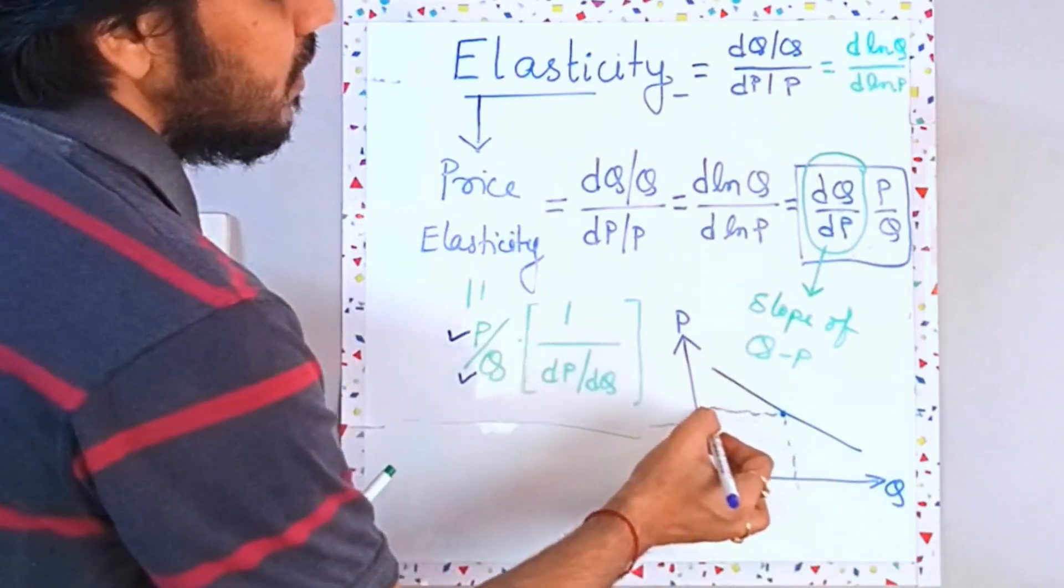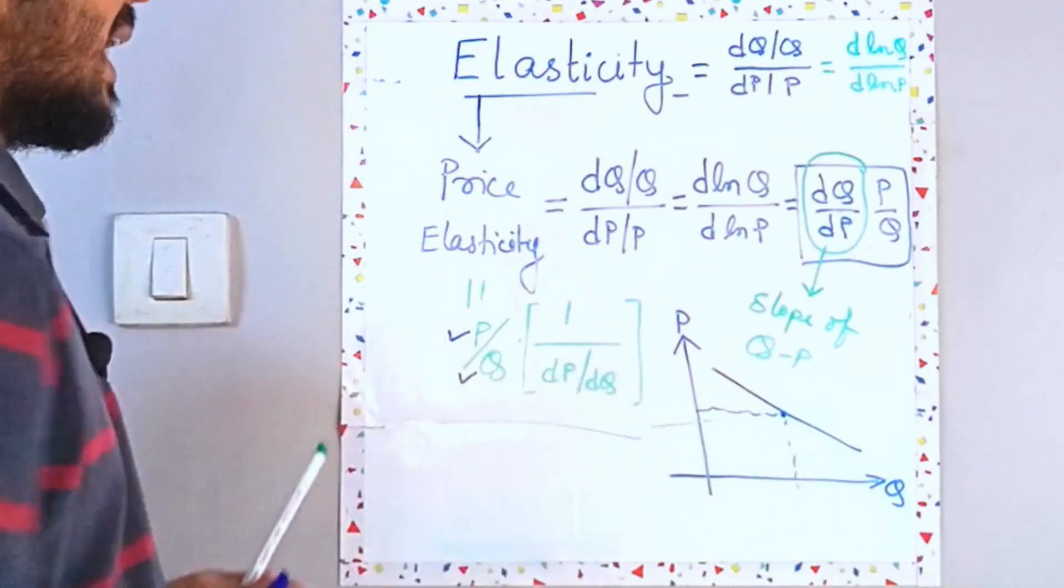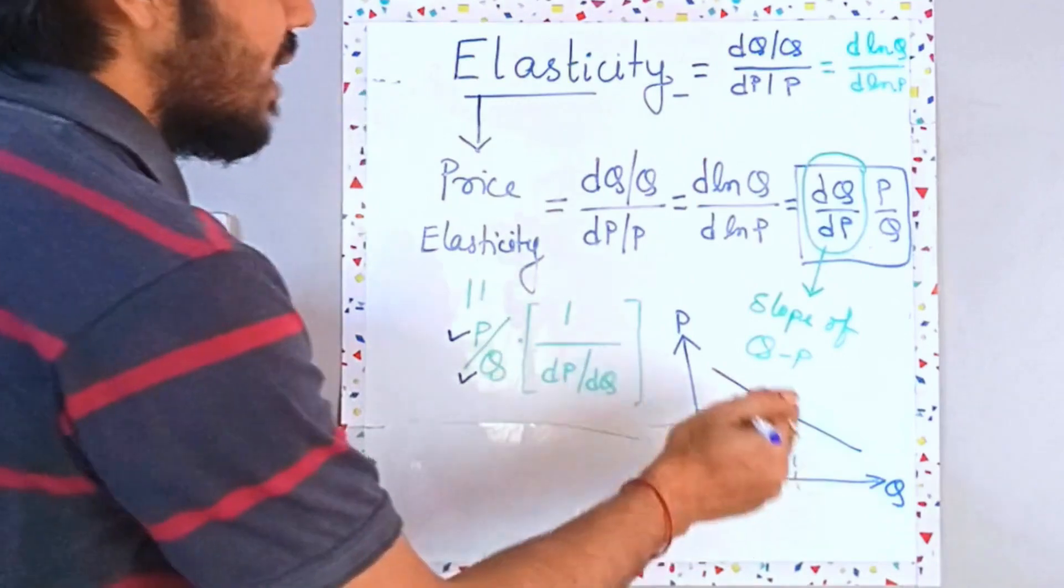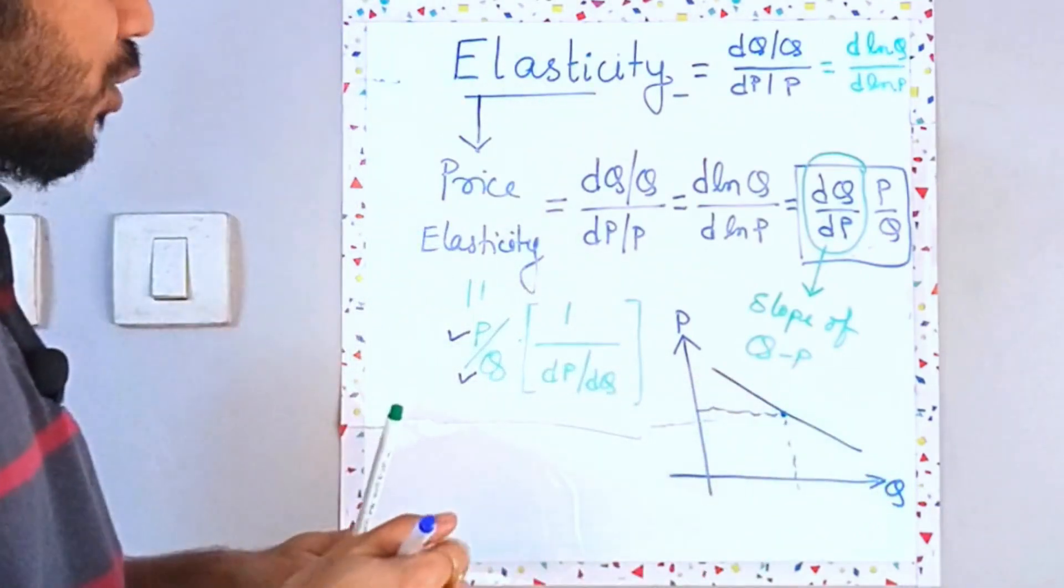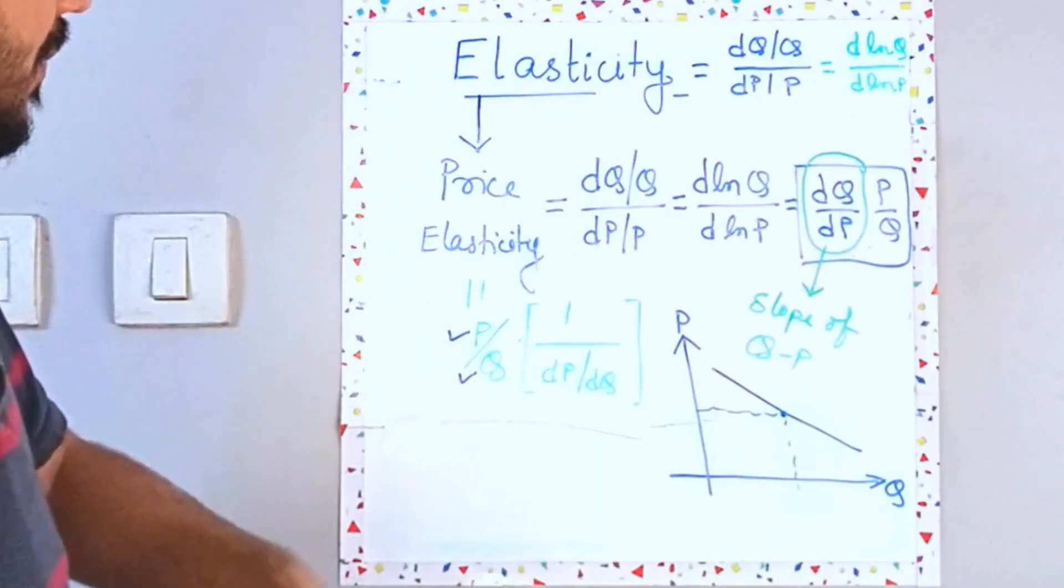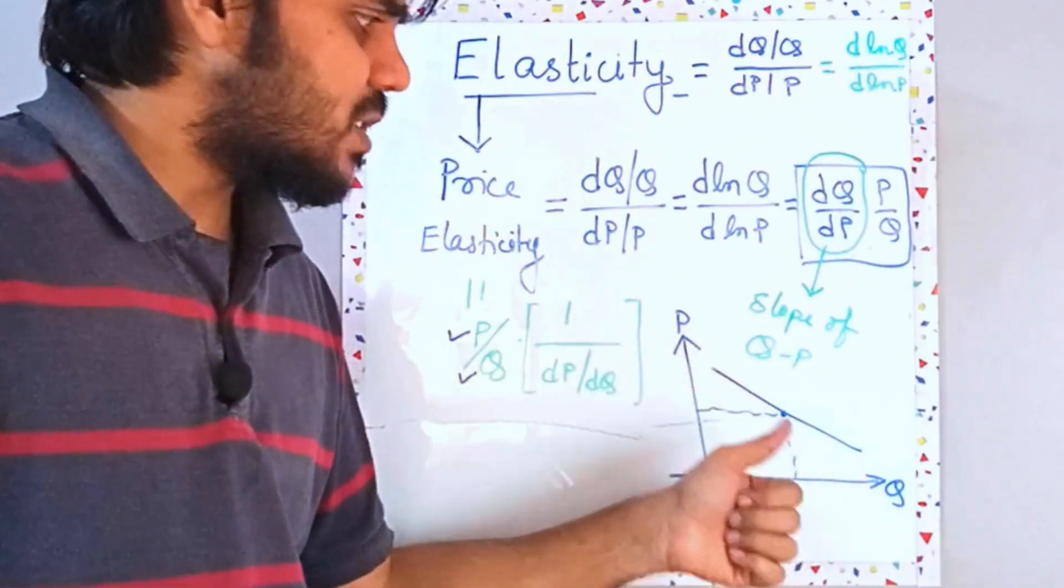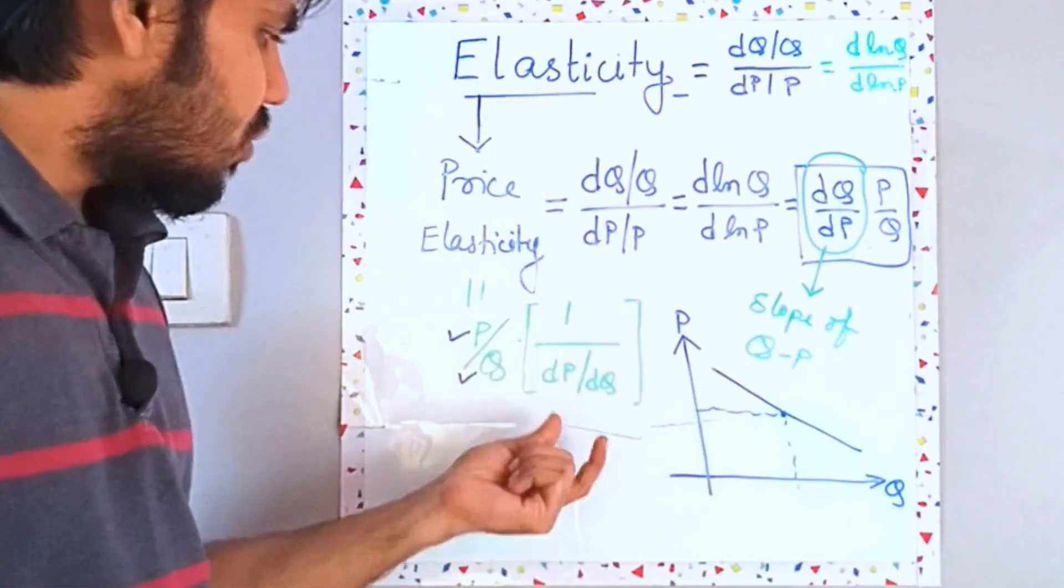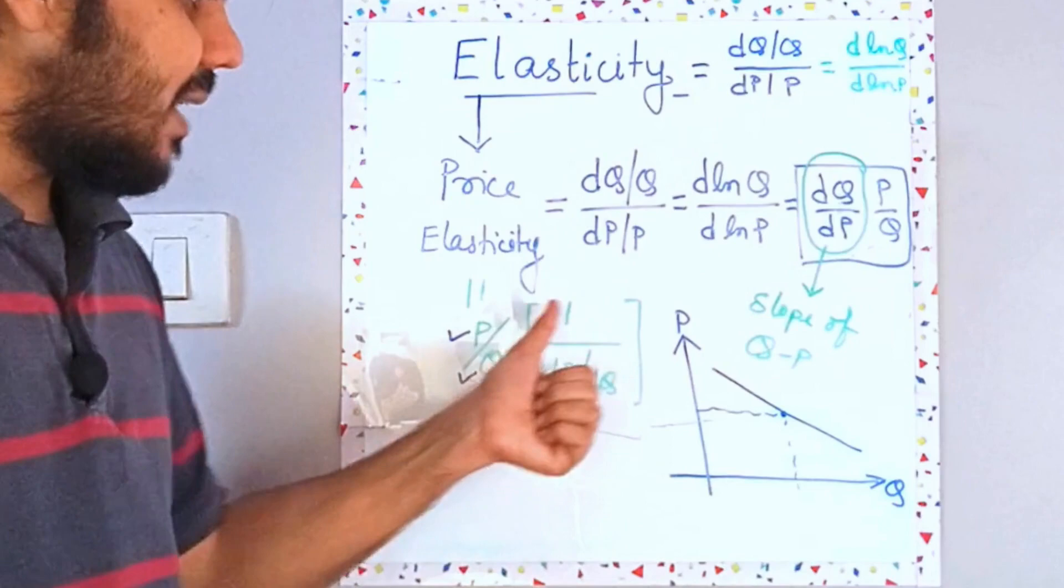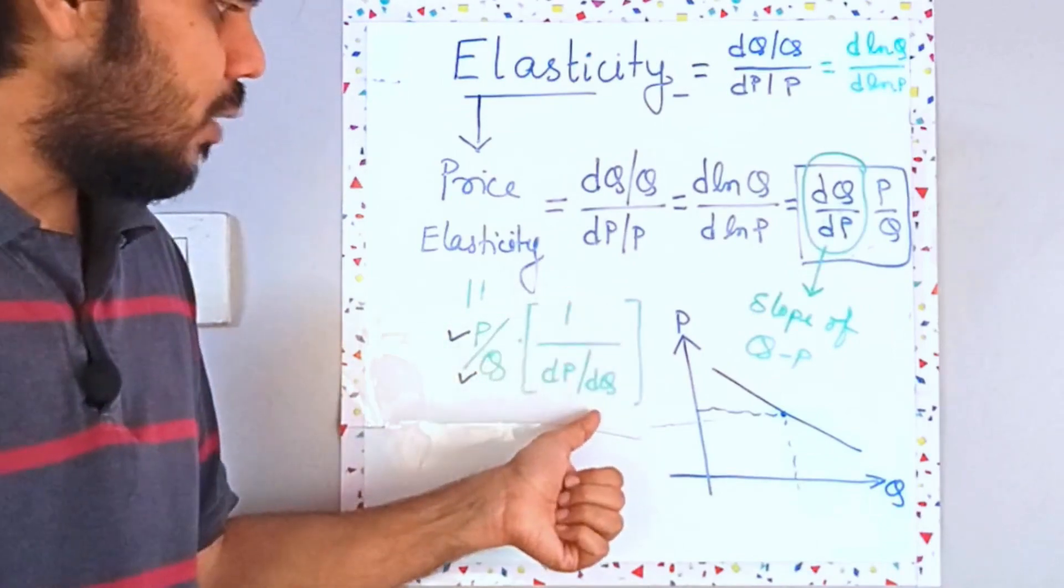So this is Q, this is P. So plug in over here. You will get the idea of elasticity at all the points. Now you can see that over here this is a straight line. So my slope is going to be constant. So this thing the second term over here 1 by DP upon DQ is going to be constant.